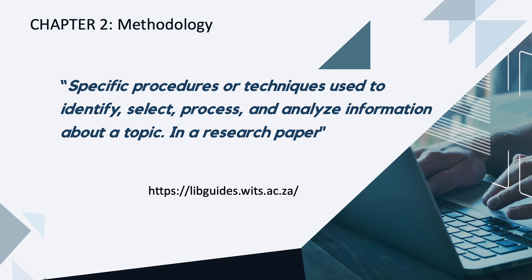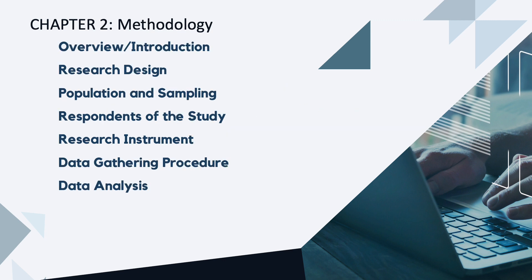Chapter 2 is methodology. It is the specific procedures or techniques used to identify, select, process, and analyze information about a topic. In a research paper, the methodology section allows the reader to critically evaluate a study's overall validity and reliability. Researchers typically select a methodology based on the type of questions they are attempting to answer. According to Patton in 2015, as cited in Curnuta and Germain in 2019, an understanding of philosophical paradigms can help researchers choose a perspective most relevant to the problem they are investigating.